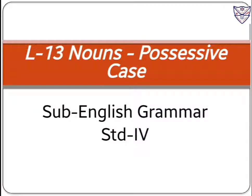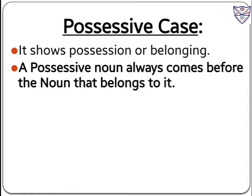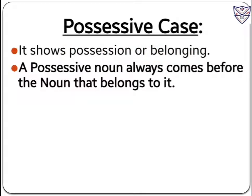Hello students! Let us start with English grammar lesson 13: Nouns possessive case. So what is a possessive case? It shows possession or belonging. A possessive noun always comes before the noun that belongs to it. A possessive case means a noun which always comes before the noun that belongs to it, and it is used to show possession or belonging in the sentence.